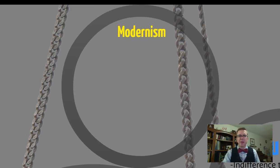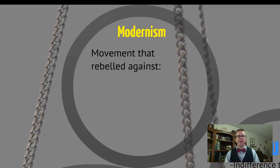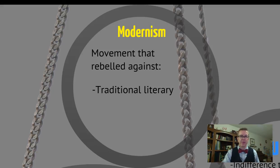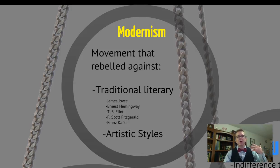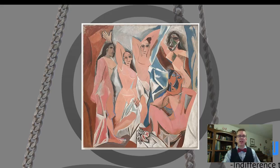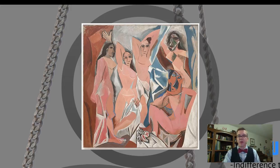Let's look finally at modernism. This is a movement that rebels against traditional literary forms. Authors include James Joyce, Ernest Hemingway, T.S. Eliot, F. Scott Fitzgerald, and Franz Kafka. It's a movement that lasts for a long time period. Modernism is also reflected in artistic styles — probably the most famous modernist painter is Pablo Picasso, who painted Les Demoiselles d'Avignon, better known in English as The Bathers, which shocked the world, including other artists of the time period.